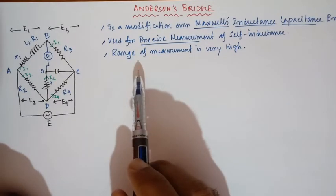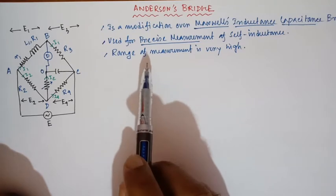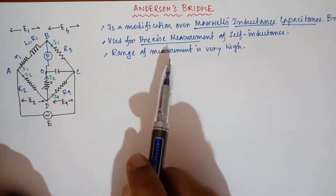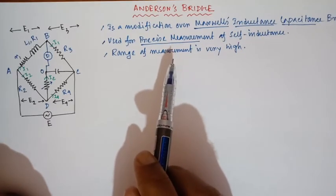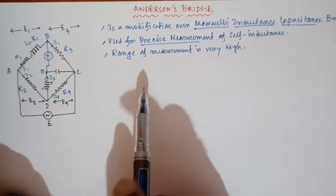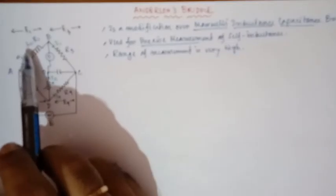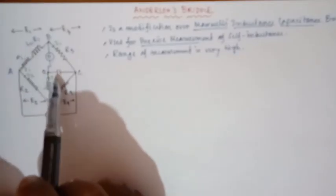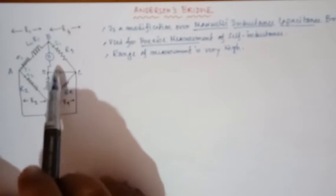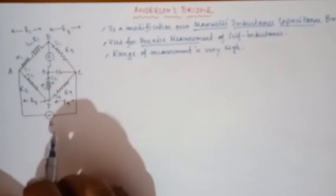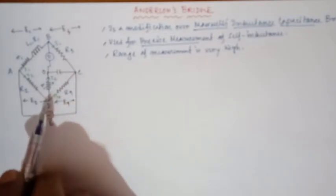The range of measurement of this bridge is really very high, so these are the two major advantages. Point number three to remember is that it is basically a modification over the Maxwell inductance-capacitance bridge. Here the unknown inductance is measured with the help of a standard capacitor — this capacitor is not a variable one, whereas the small r resistance is a variable one.